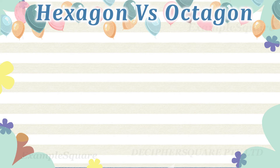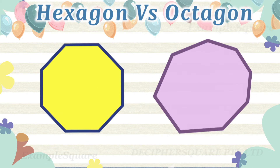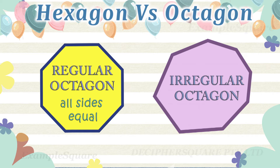If all the eight sides of the octagon are equal and all the eight interior angles of the octagon are equal, then it is a regular octagon. Otherwise it is an irregular octagon. Here is an example of a regular and irregular octagon.